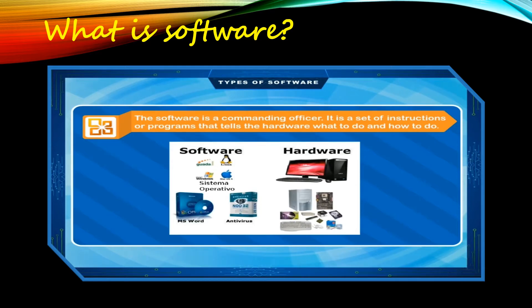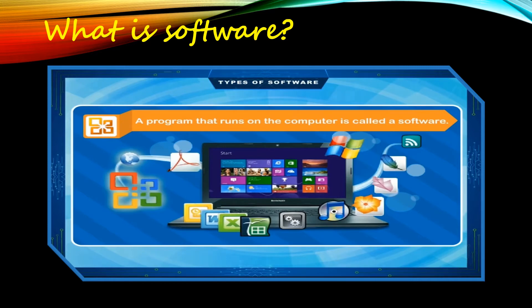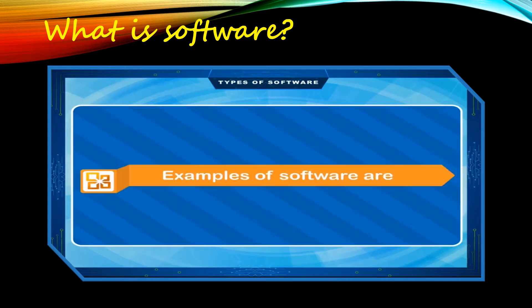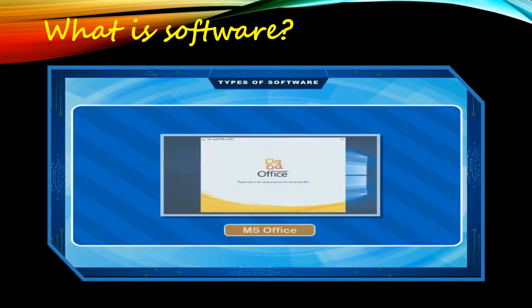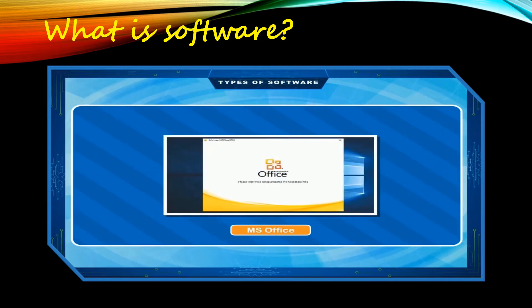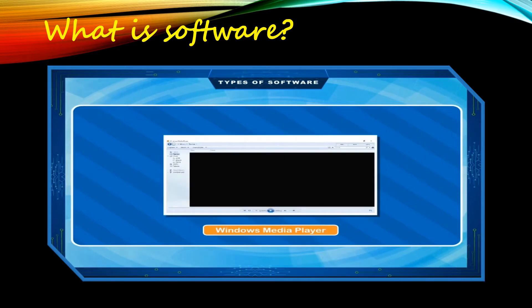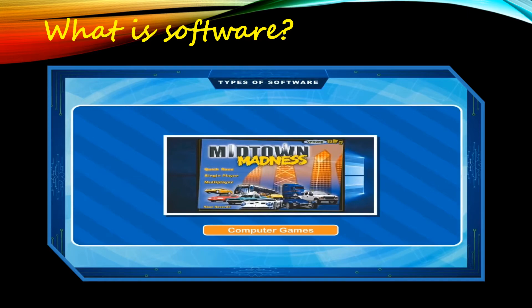Software is a set of instructions or programs which tells the computer what to do and how to do it. A program that runs on the computer is called software. The games you play and programs you use to learn interesting things on a computer are also called software. Examples of software are Microsoft Office, Antivirus, Windows Media Player, Computer Games, etc.